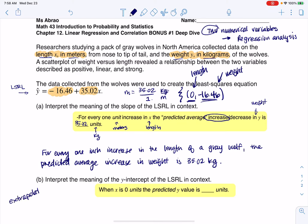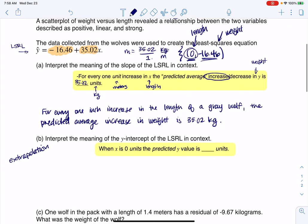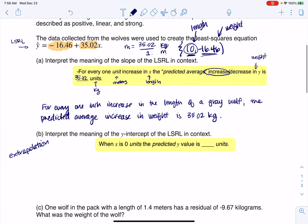This is going to be an example of extrapolation, where we are predicting outside of our initial data range. They didn't give us the original data, but there's no way that we had a gray wolf of 0 meters long in our sample. So with that, let's go plug this in. I still have a template.